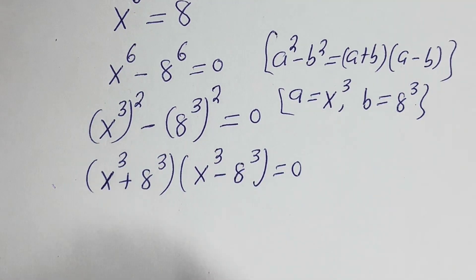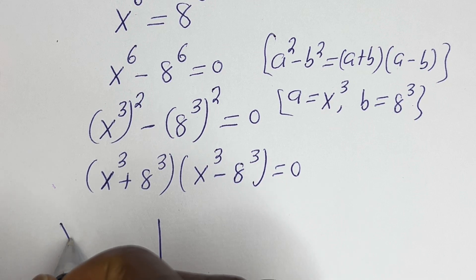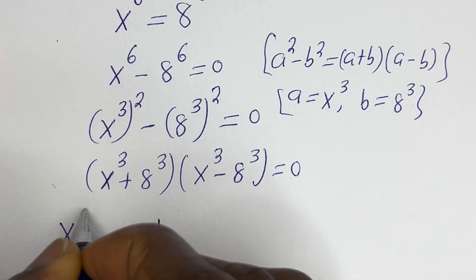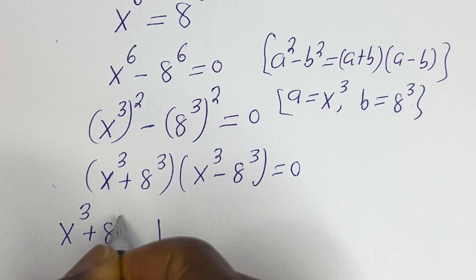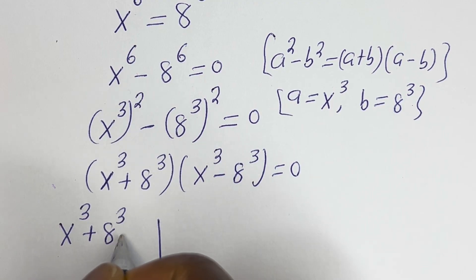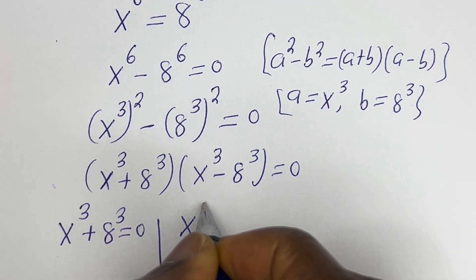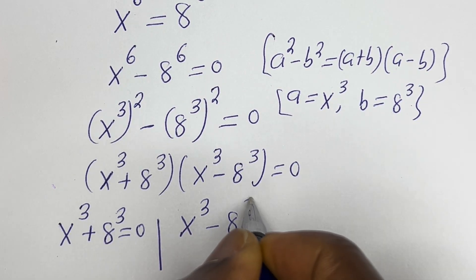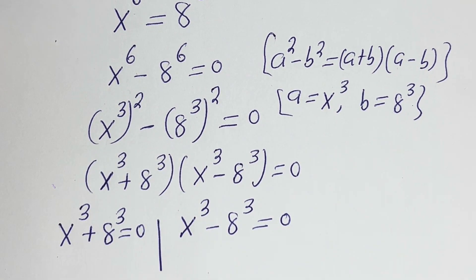There are two cases here. The first case is s to the power of 3 plus 8 to the power of 3 is equal to 0. And the second case is s to the power of 3 minus 8 to the power of 3 is equal to 0.